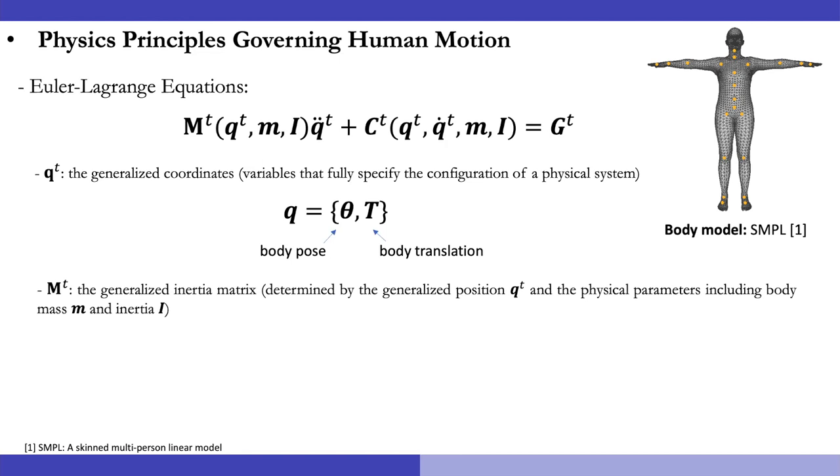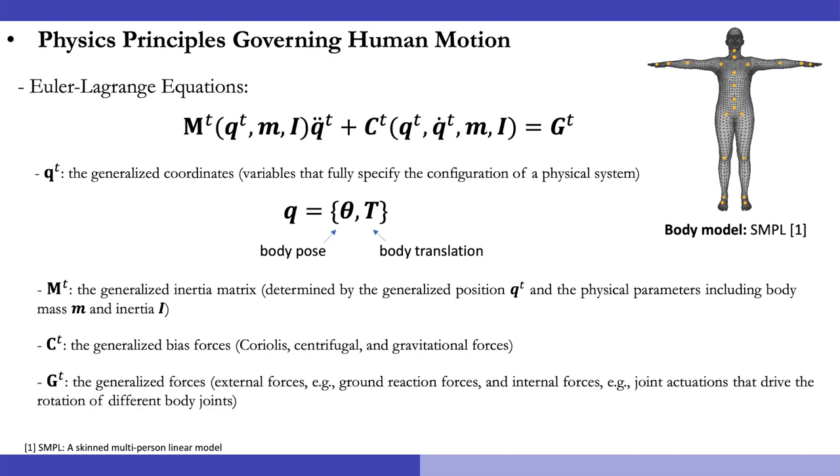Then, the generalized inertial matrix M is determined by the generalized position q and the physical parameters including body mass m and inertia I. Then, the generalized bias forces C include the Coriolis, centrifugal, and gravitational forces. Lastly, the generalized forces G consider external forces such as ground reaction forces and internal forces such as joint actuation that drive the rotation of different body joints.